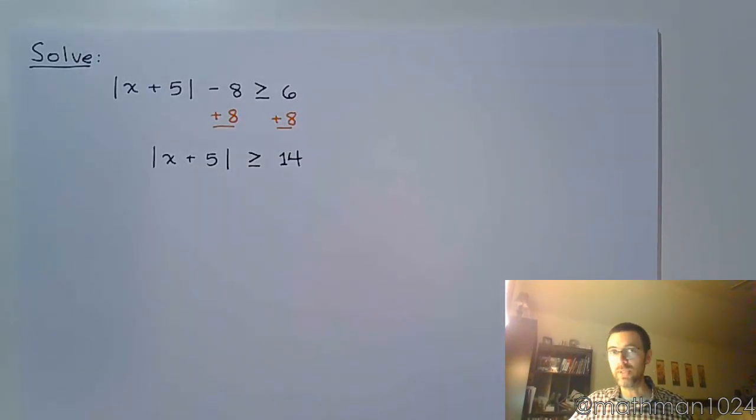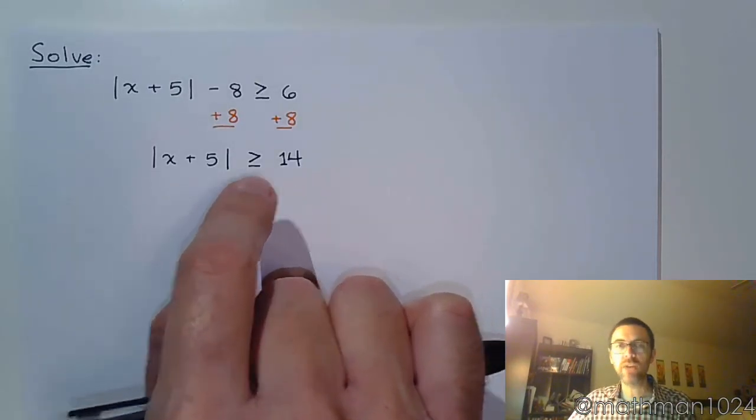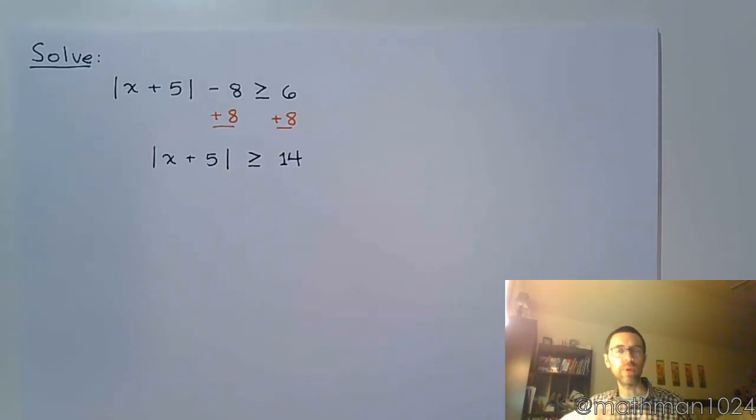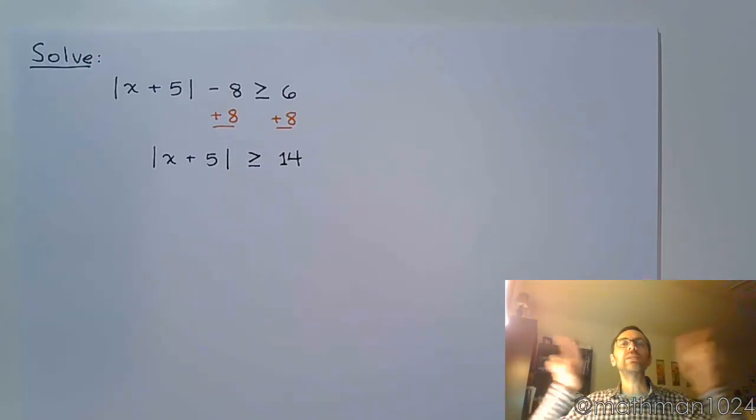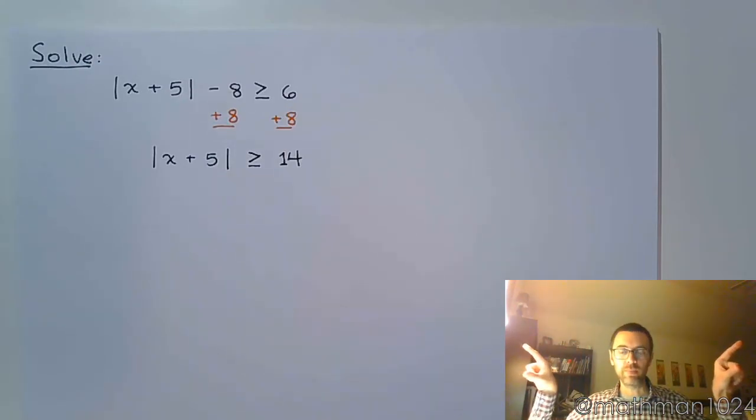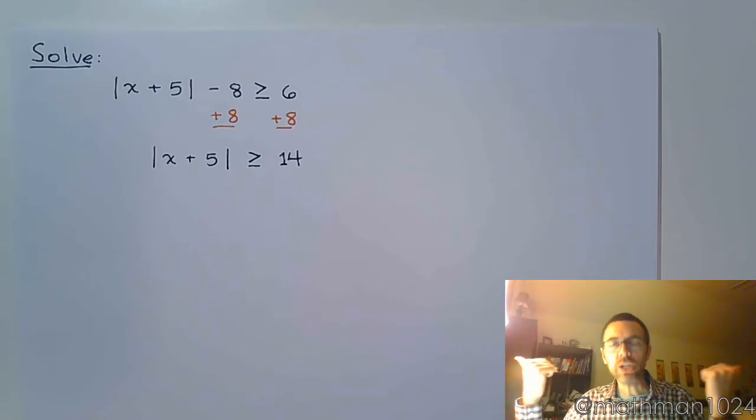Remember, absolute value measures distance. So I want your distance from me to be more than 14 units. Think about what that means. If I want your distance to be more than 14 units, am I saying stay close by, or am I saying stay away from me? That means stay away, right?